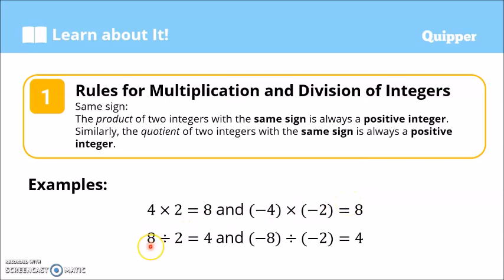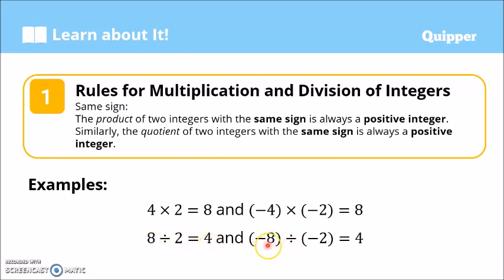Next, we have 8 divided by 2. We have a positive integer divided by a positive integer, so the quotient is positive. 8 divided by 2 is 4, so the answer is positive 4. If the answer is positive, we don't need to write the plus sign — it is automatically understood as positive. Similarly, if we have negative 8 divided by negative 2, both are negative, same signs, so the answer is positive. 8 divided by 2 is positive 4.